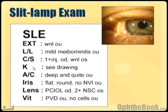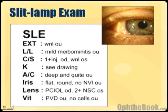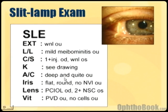KE is K for cornea and here we usually just say it's clear, or if it's not we write that as well. AC means the anterior chamber — this is the potential space between the cornea and the iris underneath, and that's filled with aqueous fluid. Normally it's crystal clear and so we write deep and quiet. If someone has an acute glaucoma it might be shallow, or if they've got an infection in the eye it might have some cell and flare, which I'm going to show you in a future video.